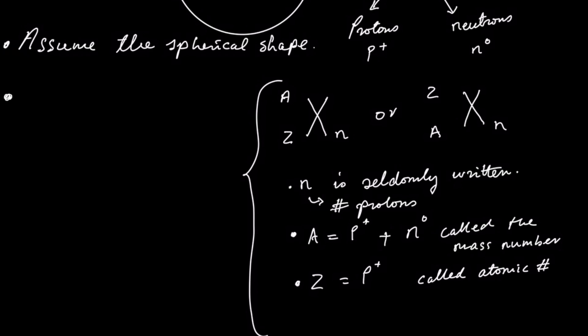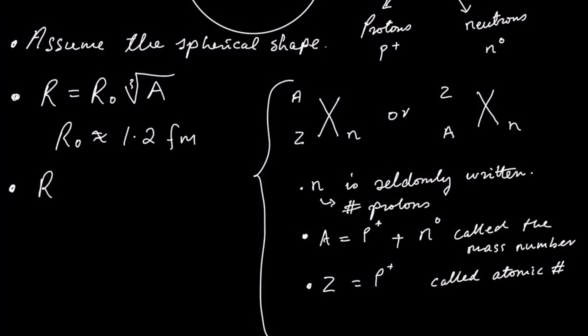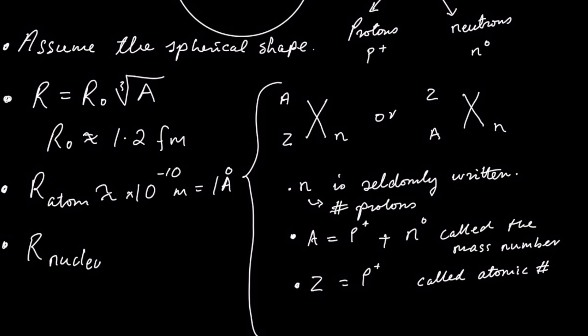The other thing that you need to note is that the radius of a nucleus is normally calculated using the formula R equal to R0 times the cube root of the number of nucleides. R0 is a constant which is in the order of 1.2 femtometers. We know that the radius of the atom is in the order of 1 angstrom and the radius of the nucleus is in the order of 1 femtometer.